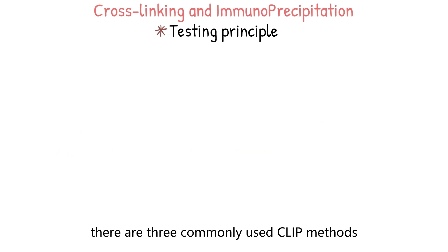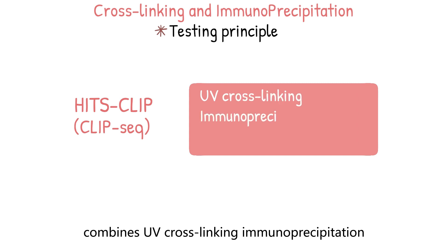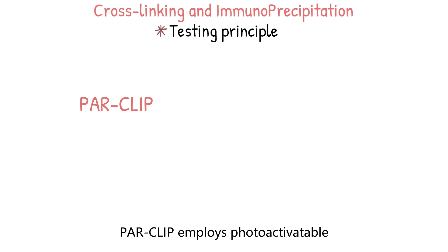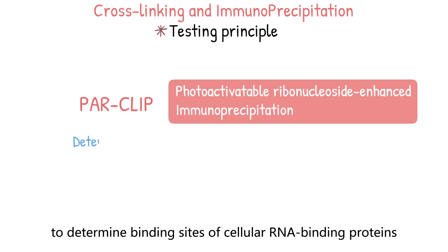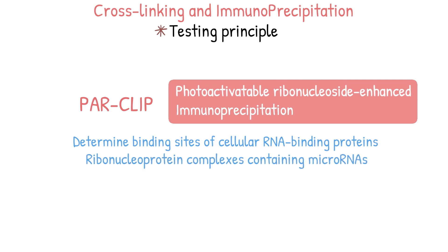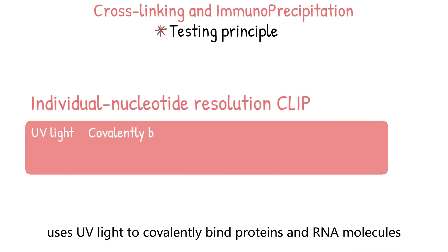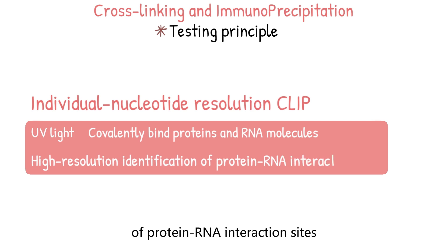Currently, there are three commonly used CLIP methods. HITSCLIP, or CLIP-seq, combines UV crosslinking, immunoprecipitation, and high-throughput sequencing to identify binding sites of RNA-binding proteins. PARCLIP employs photoactivatable ribonucleoside-enhanced crosslinking and immunoprecipitation to determine binding sites of cellular RNA-binding proteins and ribonucleoprotein complexes containing microRNAs. Individual nucleotide resolution CLIP uses UV light to covalently bind proteins and RNA molecules for high-resolution identification of protein-RNA interaction sites.